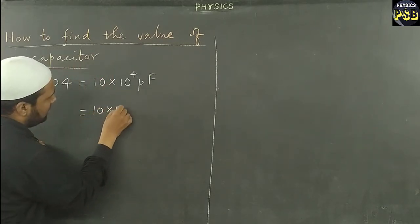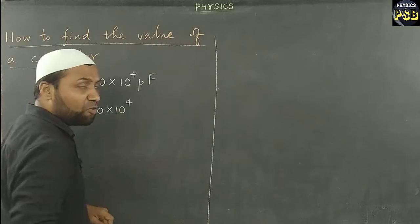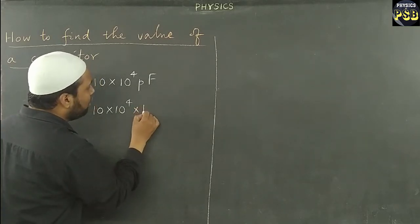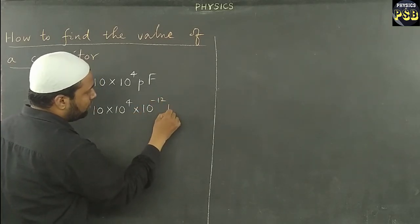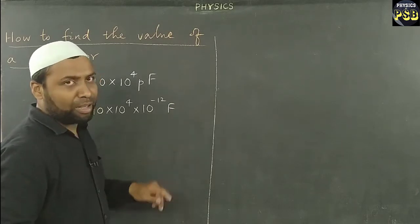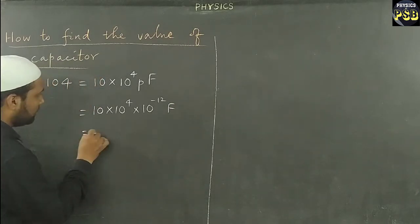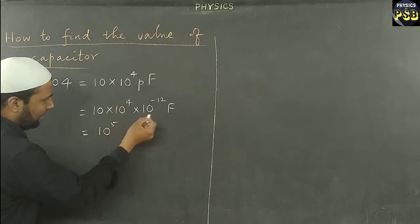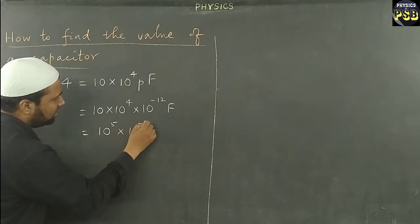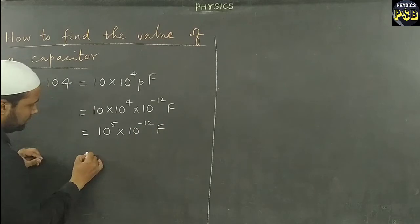Then the next step, I keep this as such. Here 1 picofarad is equal to 10^-12 Farad. Farad is the unit of capacitance. Now, when I multiply these two, I get 10^5 × 10^-12 farad.